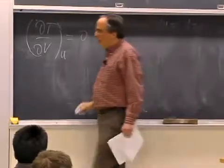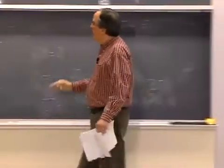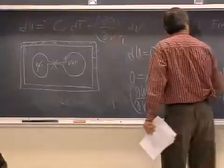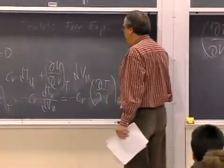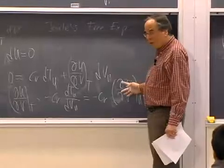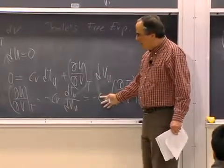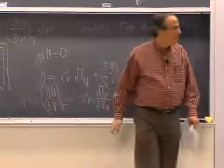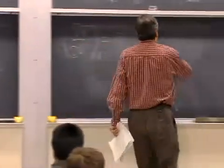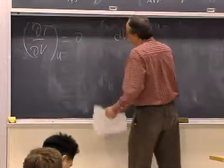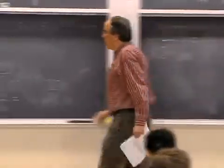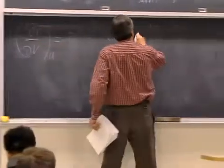And that implies that since the quantity we want is given by this quantity, which is zero times a constant, the quantity we want is also zero. So it would imply that du was equal to only the first term, cv dt.